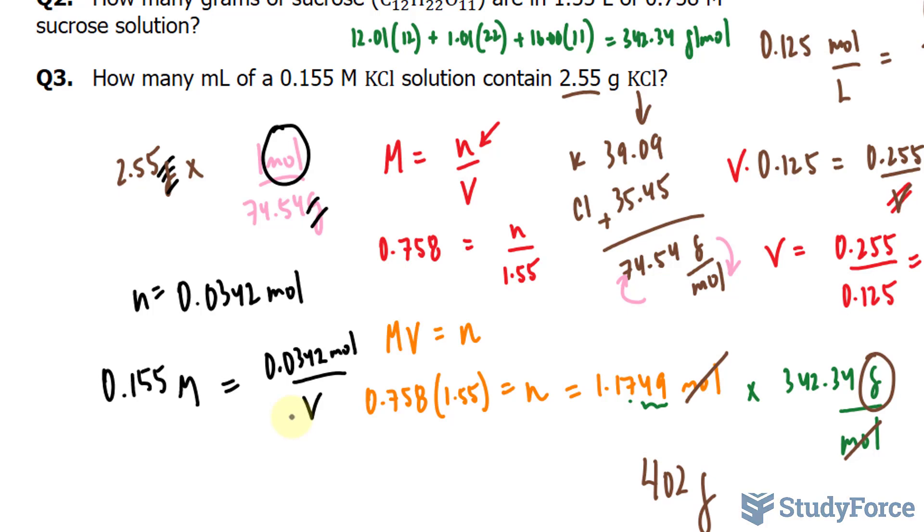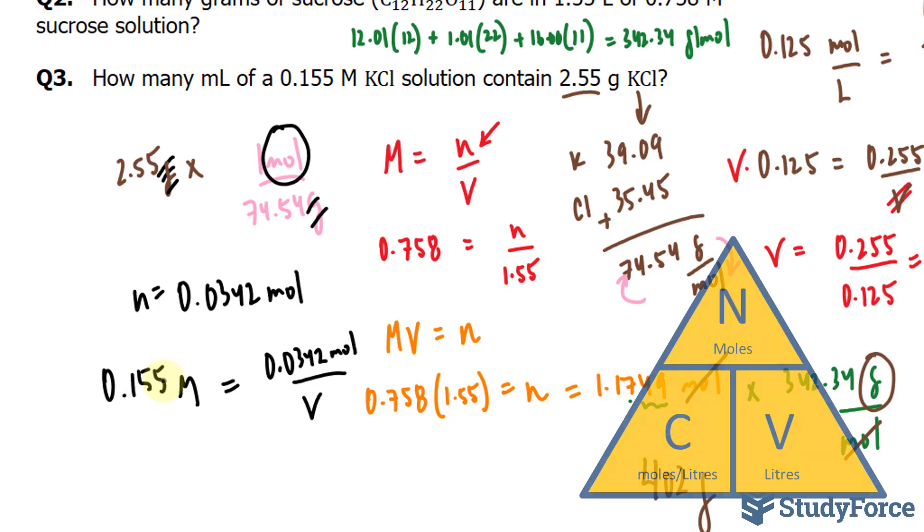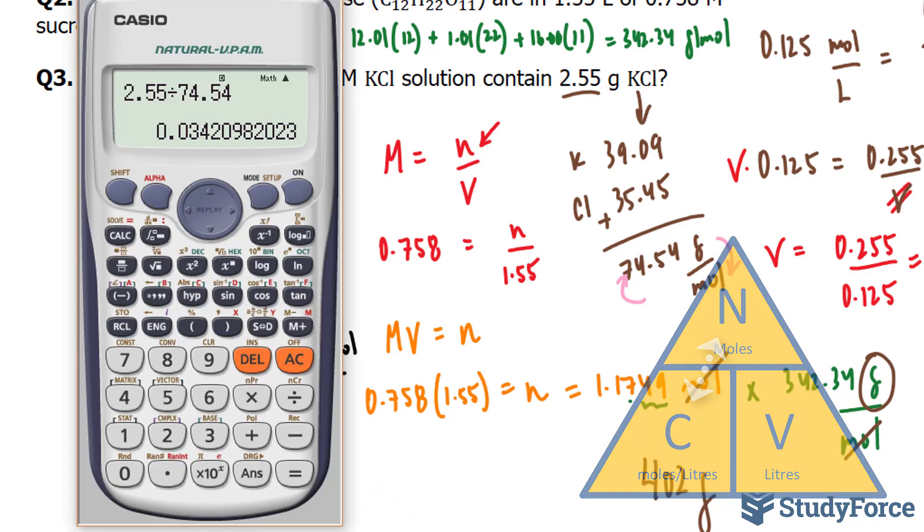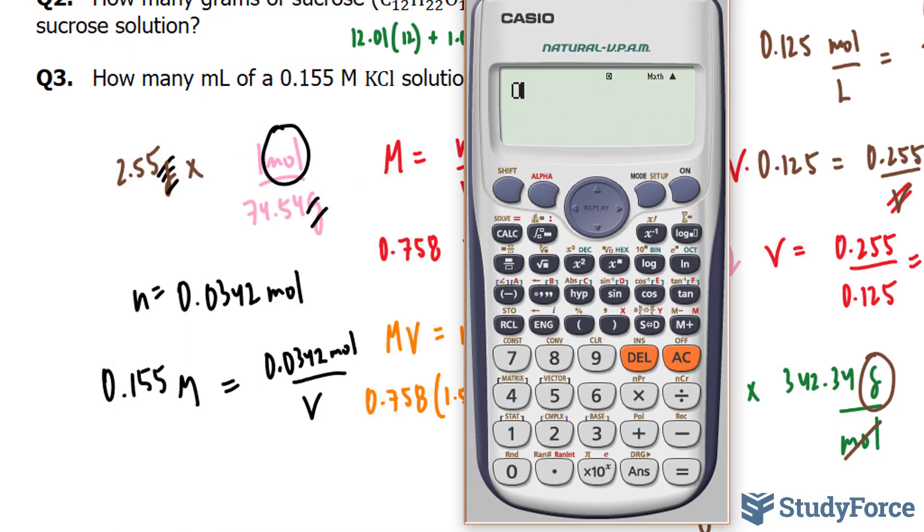To find the volume in liters, what I will do is take this number and divide it by this number. And it's the exact same calculation as in question one, where I multiplied both sides by V and then divided both sides.